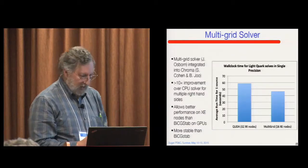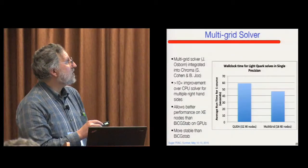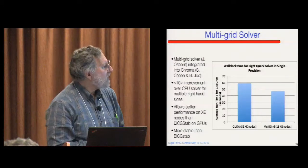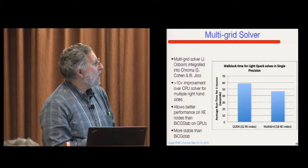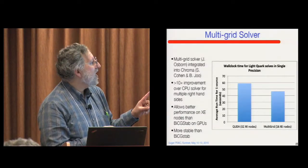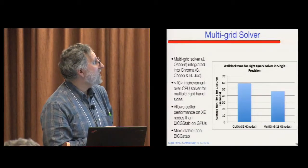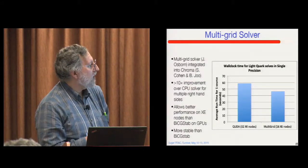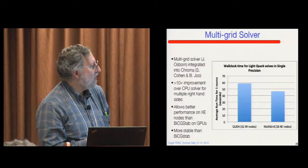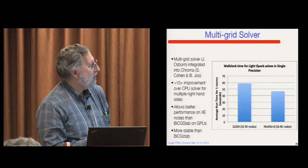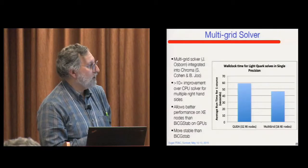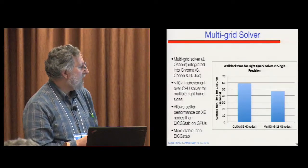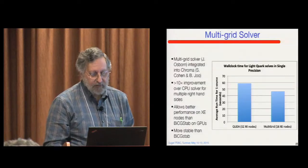This is another example of some code development. In this case, we introduced a multi-grid solver. This was done by James Osborne. And it was integrated into Chroma by Cohn and Ju. There's a ten times improvement over the CPU solver for multiple right-hand sides by introducing the multi-grid solver. And what I'm actually showing in this bar chart is, again, it's run time, so shorter is better. This is running a non-multi-grid solver on the GPUs on 32 nodes. This is running the multi-grid solver on the CPUs on 16 nodes. So it's quite a nice improvement in speed up and use of resources. And it turns out that the multi-grid solver is more stable than the bi-CG stab solver that we were using before.